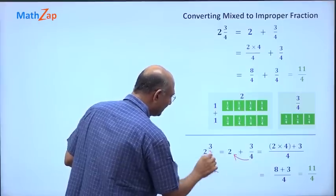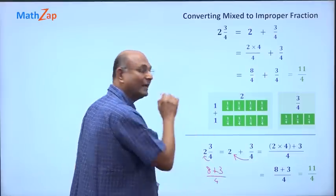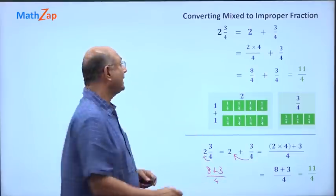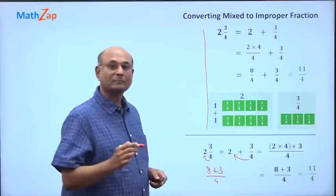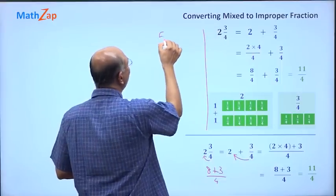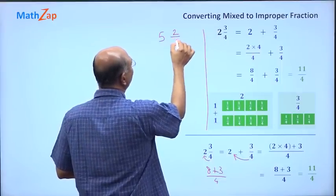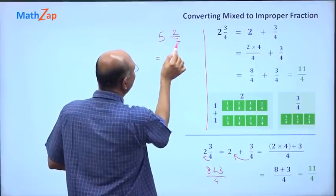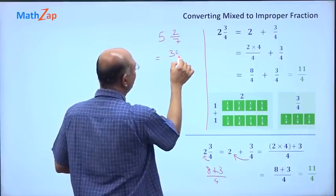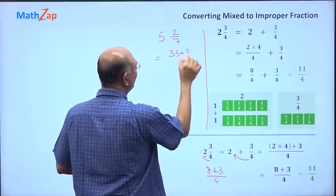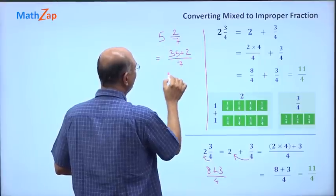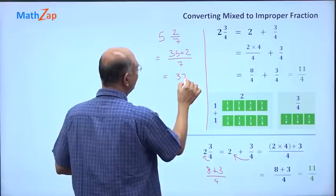Let us take one more example. Suppose I had 5 and 2 by 7. What will I do? 5 times 7 is 35 plus the numerator 2 by 7, and so that is just 37 by 7.